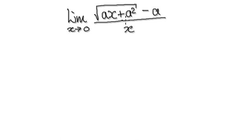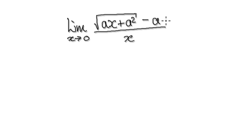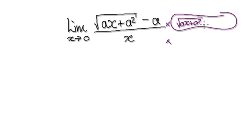Hang on, let's go back here. You don't always have to use L'Hôpital's rule. So here times top and bottom by the conjugate of this. So that will be, so times top and bottom by root ax plus a squared. And then instead of minus, you plus a.